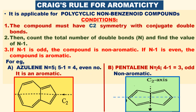Let us consider pentalene. It consists of a C2 axis of symmetry with alternate single and double bonds. The number of double bonds is 4, so N equals 4. N minus 1 equals 4 minus 1 equals 3, which is an odd number. So the compound is non-aromatic.